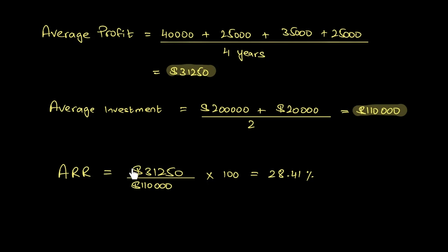Now we calculate ARR: 31,250 / 110,000 × 100 = 28.41%. This means for every dollar invested, this project yields a 28.41% return on investment in profit terms. You can now compare this against alternative machines — if an alternative yields less than 28.41%, invest in this project; if it yields more, do not accept this project. ARR allows you to compare investments' returns on investment against available alternatives.